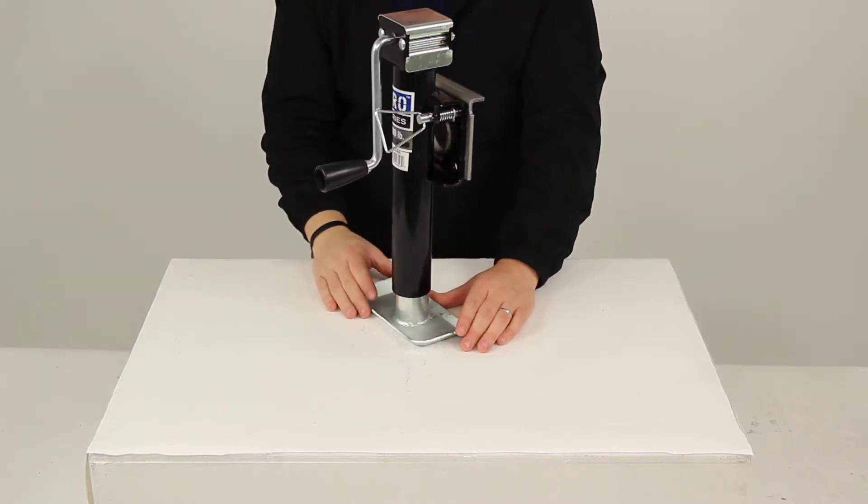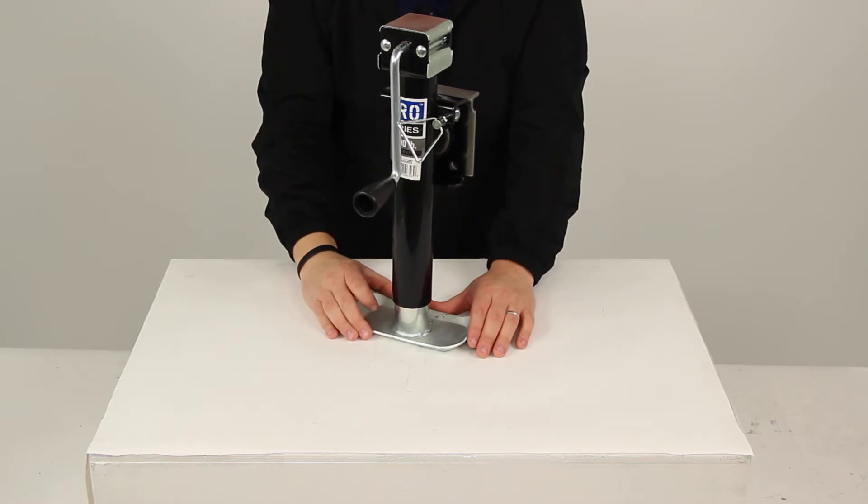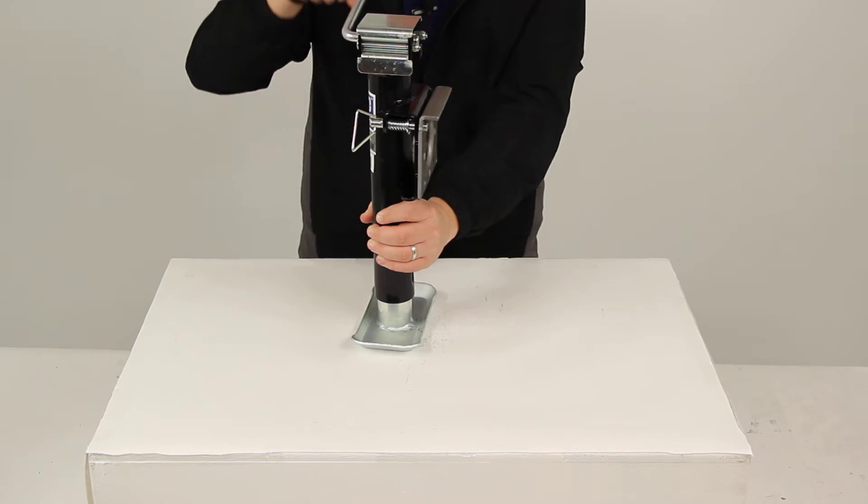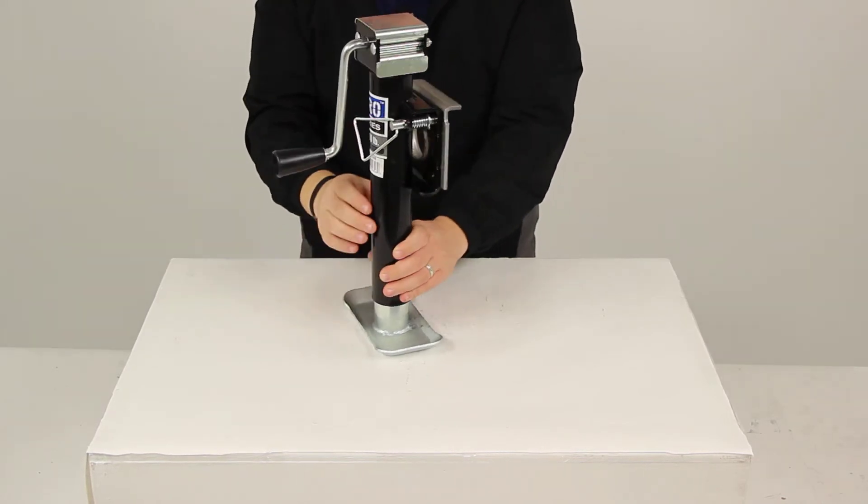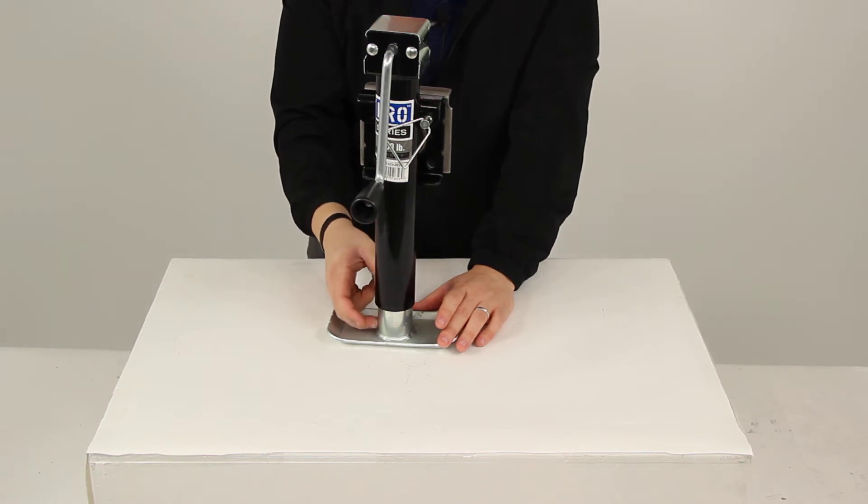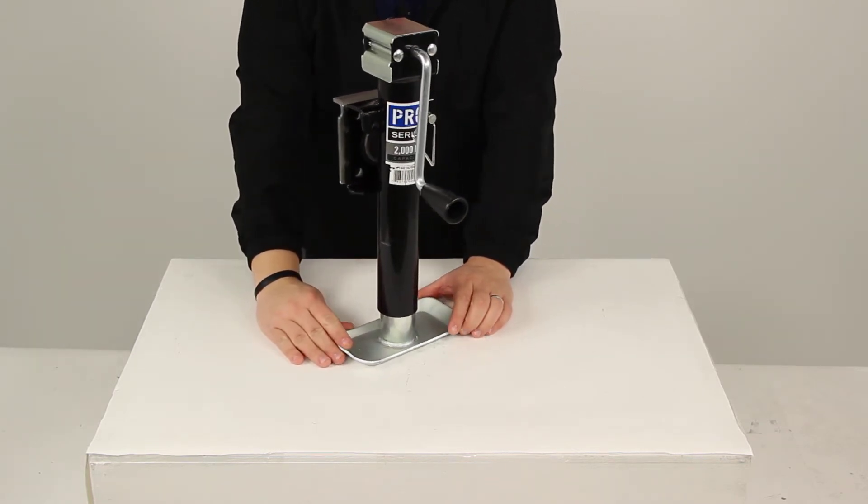This has precision fit parts that provide exceptional stability and reliability. The side wind handle has a smooth ergonomic design for easy cranking. The outer tube has a black paint finish and the inner tube is zinc plated to help it stand up against corrosion.